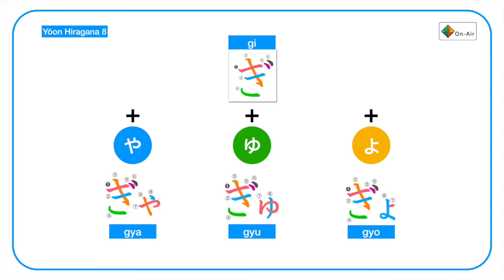Next, we have the dakuon letters plus the ya, yu, yo. So start with gi. Gya, gyu, gyo. Gya, gyu, gyo.